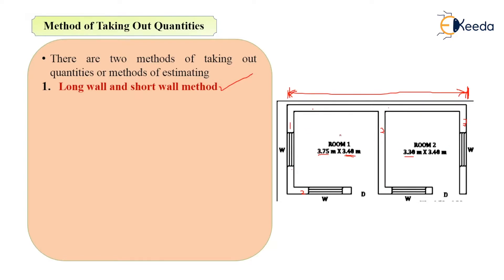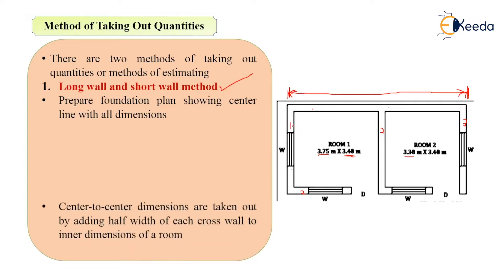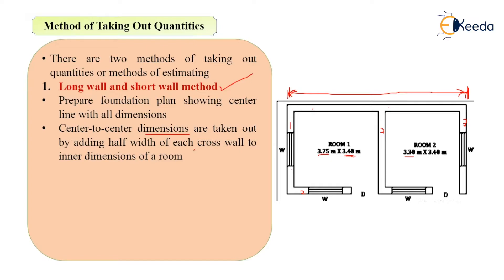This is the simple method you can adopt for selecting short walls and long walls. First, prepare the foundation plan showing the centerline with all dimensions. Then, center-to-center dimensions are taken out by adding the half width of each cross wall to the inner dimension of the room. After that, divide the walls into two categories: long wall and short wall.